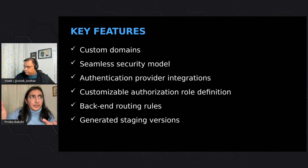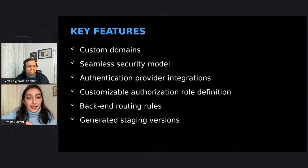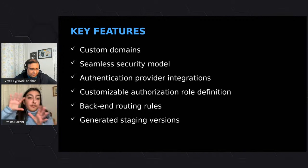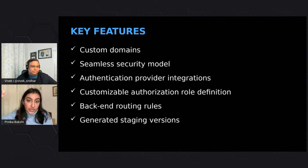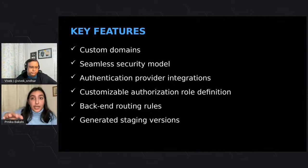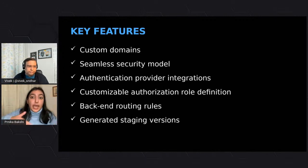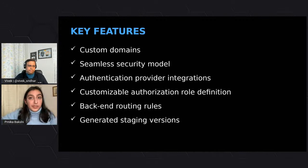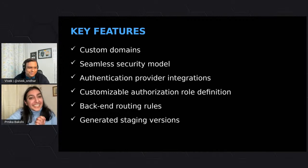There is also customization with authorization, role definitions, and different assignments — a feature new to Pranika discovered while developing the app. Backend routing rules enable full control over the content and routes you serve. Finally, there are generated staging versions powered by pull requests, allowing preview of site versions before publishing — including showing how Azure Functions and GitHub Actions work in the backend.